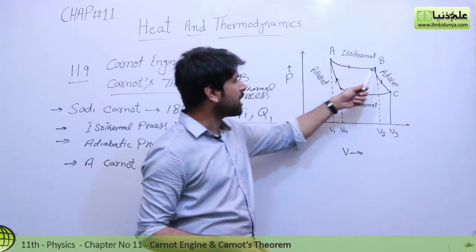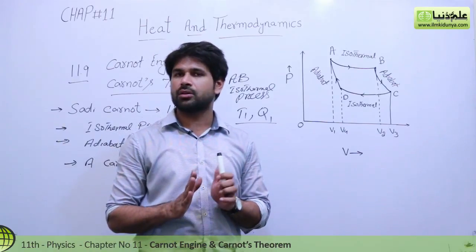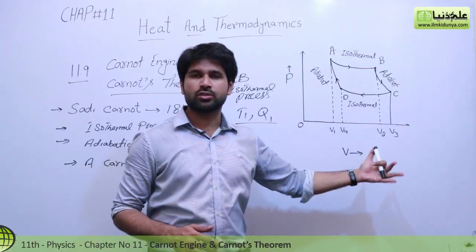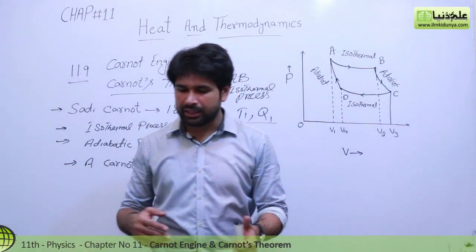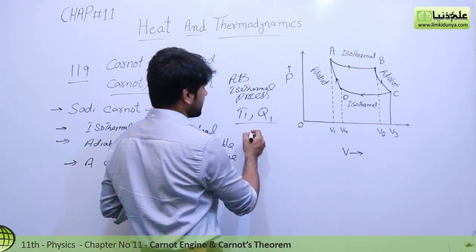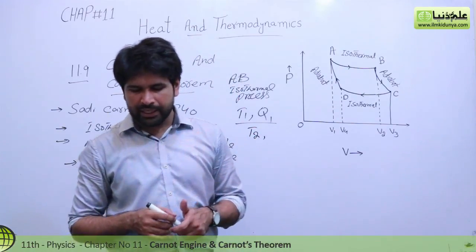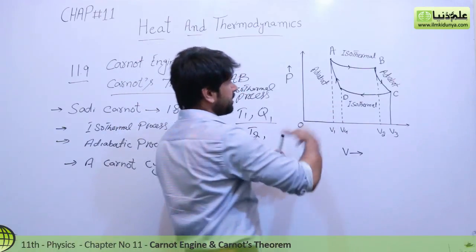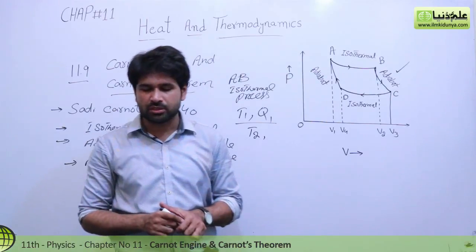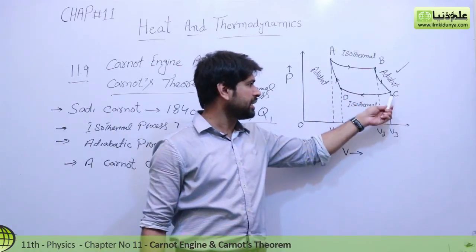After that, the gas expands again, but this time the temperature is not kept the same - it is not isothermal. We have an adiabatic process, which is a sudden expansion, and during this expansion our temperature drops from T1 to T2. This corresponds to curve B-C, the adiabatic process.